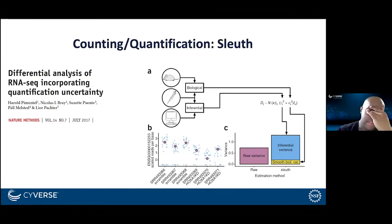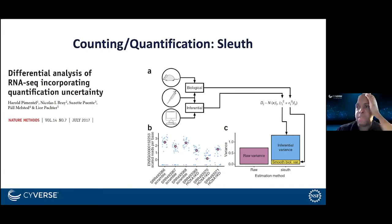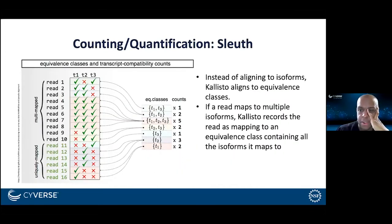What goes along with Kallisto is the second piece of software called Sleuth, where the statistical analysis and visualization take place. What's happening there is you calculate the biological variance, make linear models to subtract and differentiate biological variation from other types of variance, and then do statistical tests that allow you to say one transcript is present at a higher abundance level than another. The transcript compatibility classes are the way of counting and binning those counts that allows the speed-up.